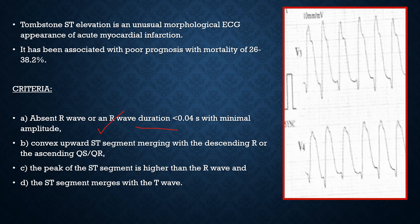Criterion two: convex upward ST segment merging with the descending R or the ascending QS/QR. In this case, it is a QS pattern merging with this segment. If R were present, there would still be a convex ST segment merging with the descending R wave — that is another pattern you can see on some ECGs.